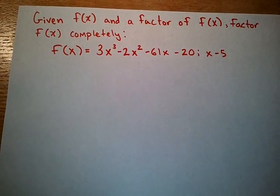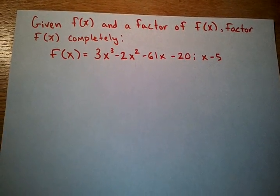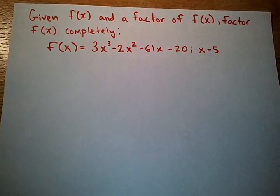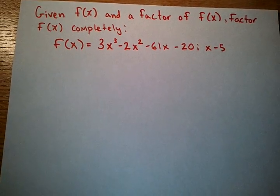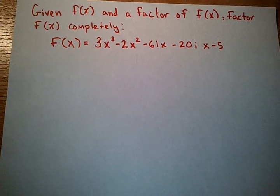And our best method of factoring it is using synthetic division to kind of chop it down into smaller pieces. So what we have here, 3x cubed minus 2x squared minus 61x minus 20.